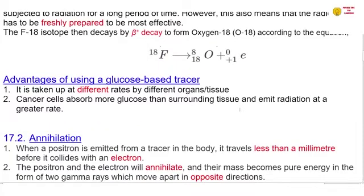Let's look at the advantages of using a glucose-based tracer. It is taken up at different rates by the different organs or tissue. So cancer cells absorb more glucose than the surrounding tissue and emit radiation at a greater rate. So it's very easy to identify the position where the cancer is or the tumor is.